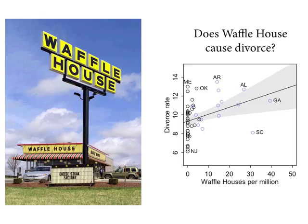Here's the thing about Waffle House. I pulled this data down myself. There's a pretty reliable correlation between the number of Waffle Houses per million people in different states in the United States and the divorce rate of those states. If you just Google 'spurious correlations,' you can find a website which finds spurious correlations by comparing the time series of two variables.